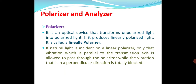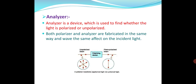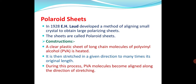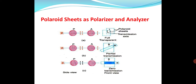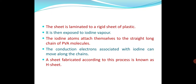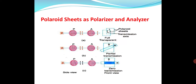Using these crystals, we can achieve a polarizer and analyzer. If we put two polarizers, one is utilized as an analyzer. When unpolarized light is polarized by one polarizer and allowed on the second polarizer, the second acts as an analyzer. We can prepare polaroid sheets — iodine atoms attach themselves to the straight long chain of polyvinyl acrylic molecules. These rigid sheets are generally utilized in LCD TVs and LCD screens.